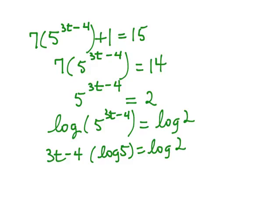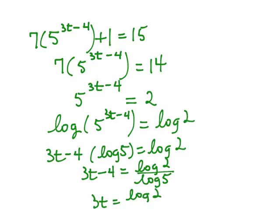Divide by the log of 5. So 3t minus 4 equals the log of 2 divided by the log of 5. Then 3t is the log of 2 divided by the log of 5 plus 4.